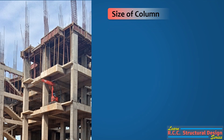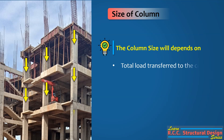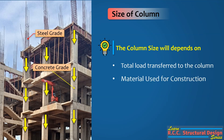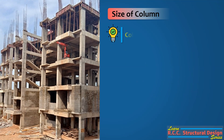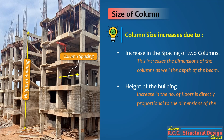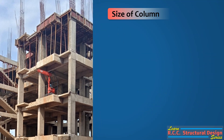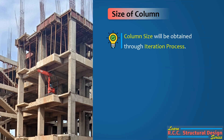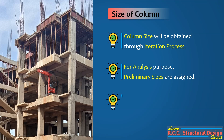Now let us discuss the size of columns. The column size of a building depends on a number of factors such as total load transferred to that column, the material used for construction, and the specific design requirements of the building. The size of a column increases due to two factors: first, the increase in spacing between two columns, which increases both the column dimensions and the beam depth; and second, the height of the building — the number of floors is directly proportional to the column dimensions. Usually, the final size of the column is obtained through an iteration process. Initially for analysis, preliminary sizes are assigned to the columns, and after analysis, columns are designed to get the final size.